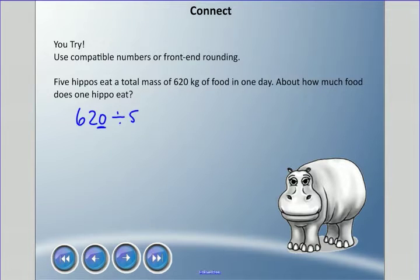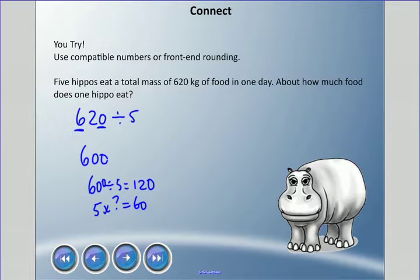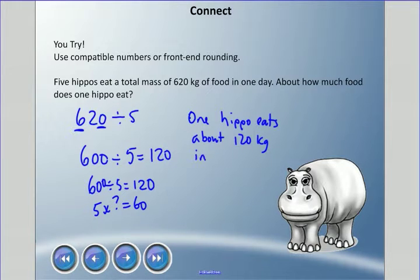The compatible number that works is also the same as the front-end rounding, and that happens to be probably 600. So we're looking at the front digit for front-end rounding, but I know that 60 divided by 5 equals 12. I can use that information to help me here, or in other words, 5 times 12 equals 60. And so with that information I can add my zero there, which equals my zero there. So 600 divided by 5 is 120. So one hippo eats about 120 kilograms in one day.